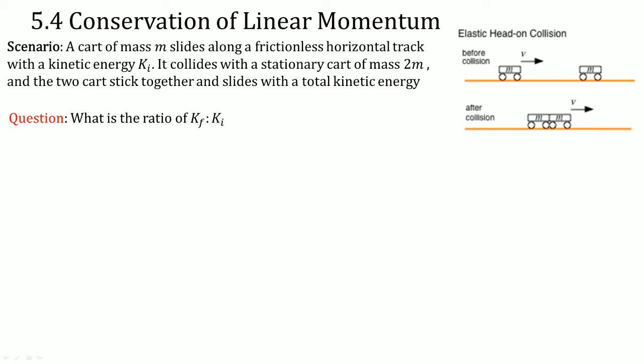Scenario: A cart of mass m slides along a frictionless horizontal track with a kinetic energy Ki. It collides with a stationary cart of mass 2m, and the two carts stick together and slide with a total kinetic energy Kf. What is the ratio of Kf to Ki?